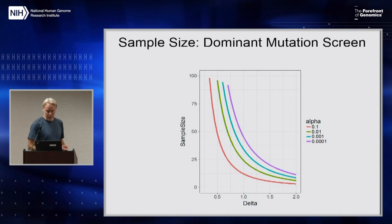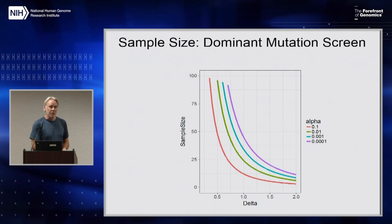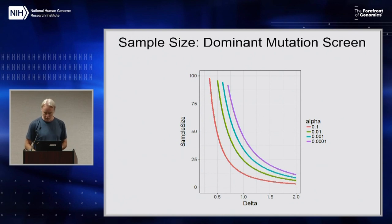And what you're going to see is that at a reasonable alpha level — you want to do some multiple test corrections for your multiple phenotypes — between 25 and 50 mice per group, so you'd have to generate 50 or 100 per mutation, is going to be an excellent sample size with sufficient power to do a good mutant screen.